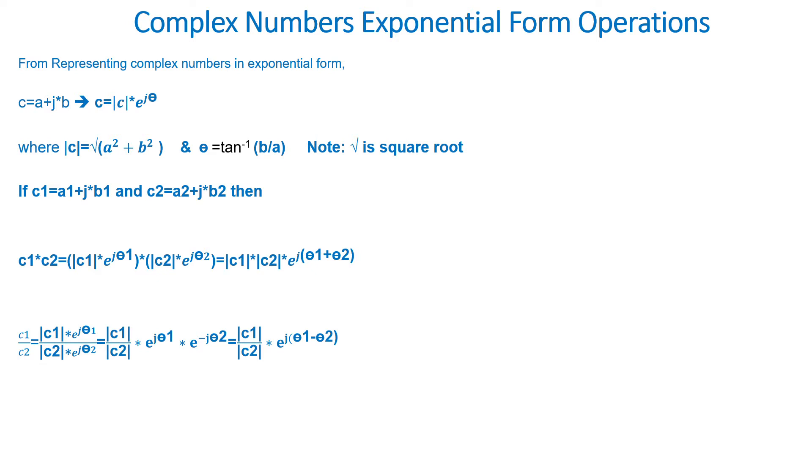C1 divided by C2 is equal to the magnitude of C1 times e to the power of j times theta 1, the whole thing divided by the magnitude of C2 times e to the power of j times theta 2.